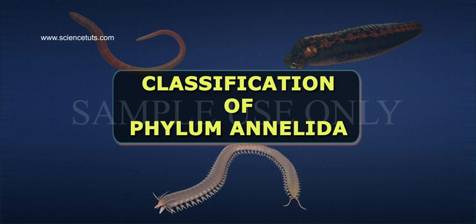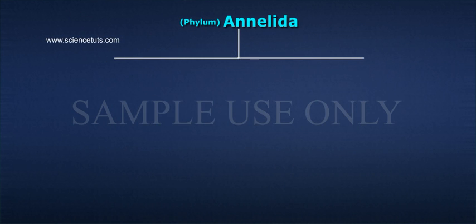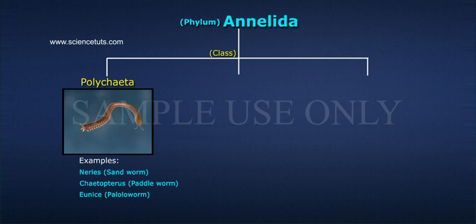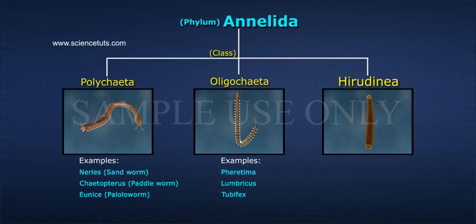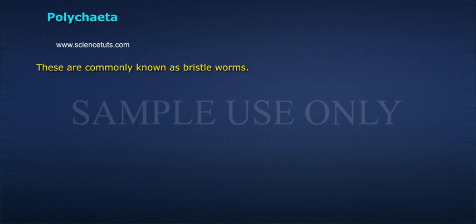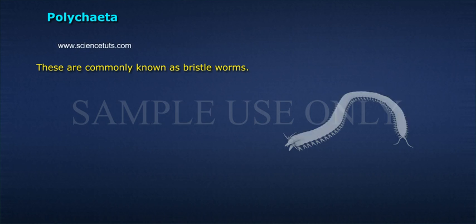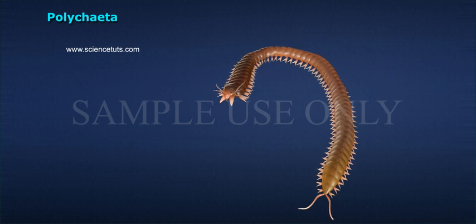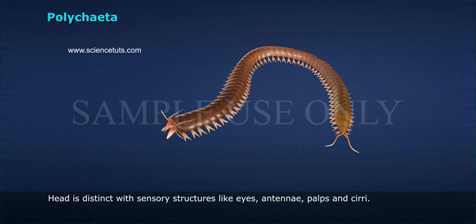Classification of Phylum Annelida: Phylum Annelida is divided into three classes — Polychaeta, Oligochaeta, and Hirudinea. These are commonly known as bristle worms. All are marine; many are burrowing, others are free-swimming, crawling, or tube-dwelling. The head is distinct with sensory structures.